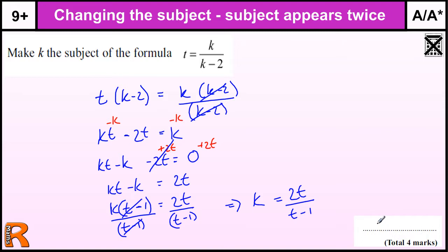So that's worth 4 marks. You get one mark for multiplying by K minus 2, or trying to multiply by K minus 2, to get rid of the fraction. It's always worth manipulating algebra if you've got a fraction — multiply the bottom of the fraction through so it gets rid of it.